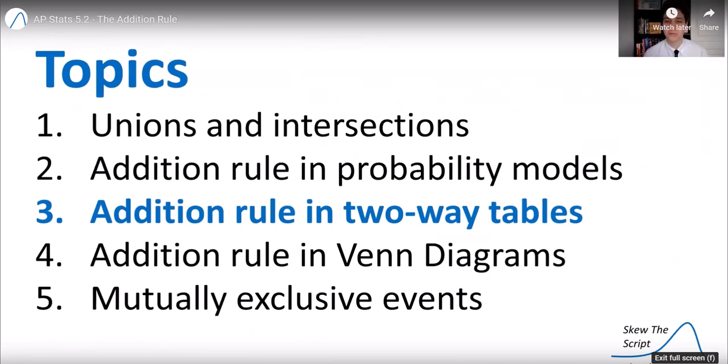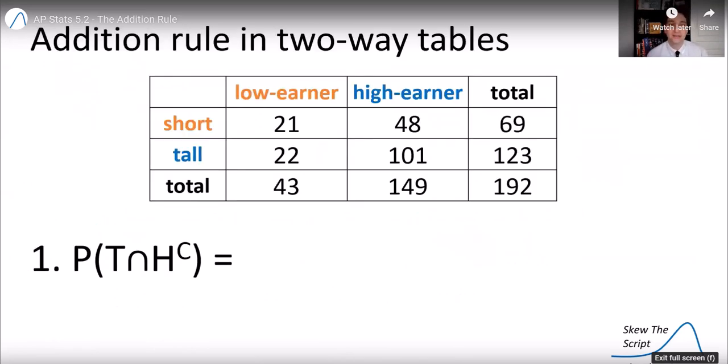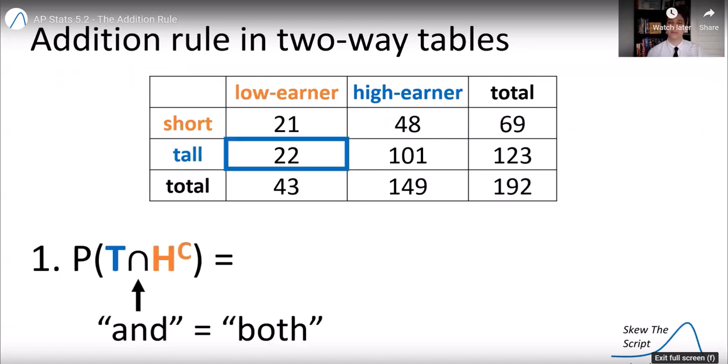Let's talk about that simple addition rule in two-way tables. So here's a two-way table of the same data. And let's find the probability of finding someone who's tall and not a high-income earner. So, and means both. So that's these people here are both tall and a not high-income earner, low-income earner. And we see the 11.5% of the people on the site. That's our chance of getting someone like that.